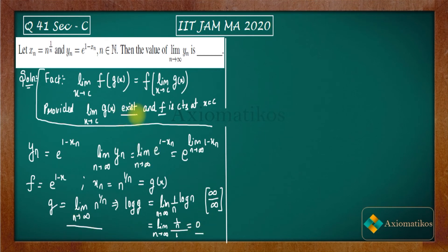So both the conditions are satisfied. F is continuous. Yes, F is continuous. This limit exists. Yes, this limit exists. That means whatever we have written here is absolutely correct. There is no problem in it.